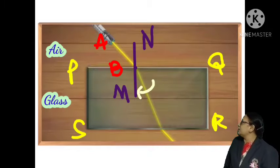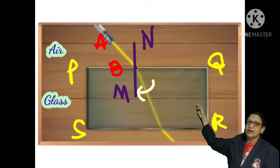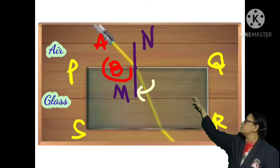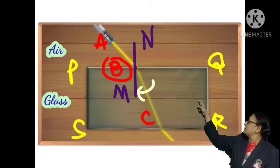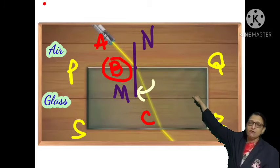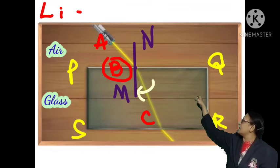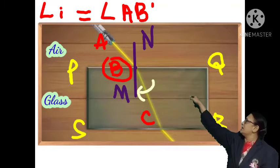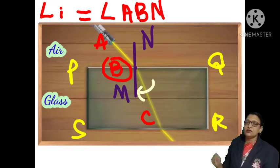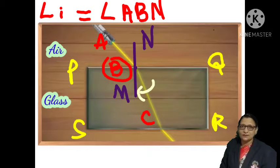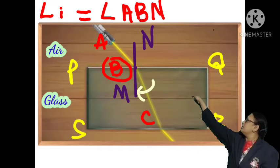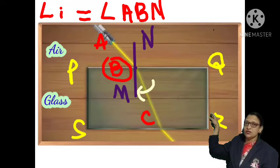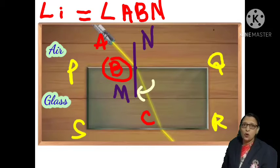The light is coming from the rarer medium to the denser medium, so it bends toward the normal and travels along path BC. The angle formed between the incident light ray AB and the normal is the angle of incidence. The light ray moves from B to C inside the glass slab, where its speed slows down.